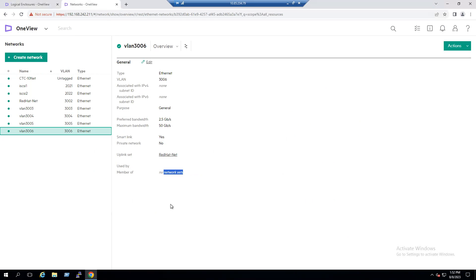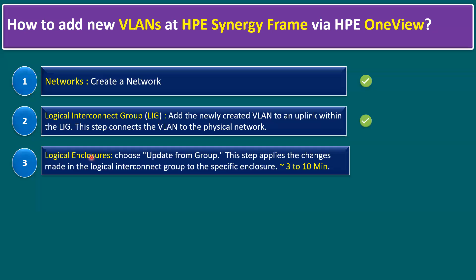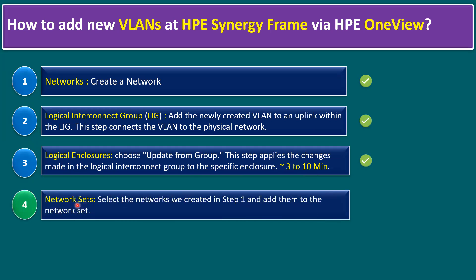Back to the slide — step three, Logical Enclosure Update From Group, is currently in progress. During this time there will be no impact to production; the production servers remain up and running. Once complete, the fourth and final step is updating the Network Sets.